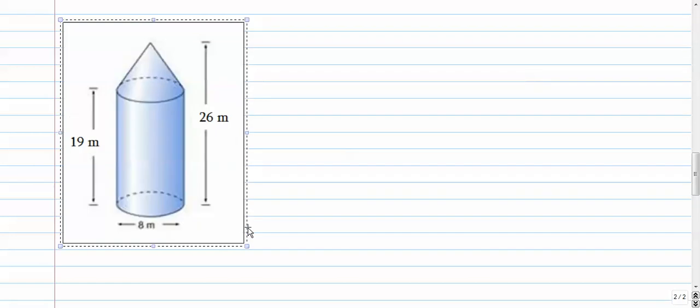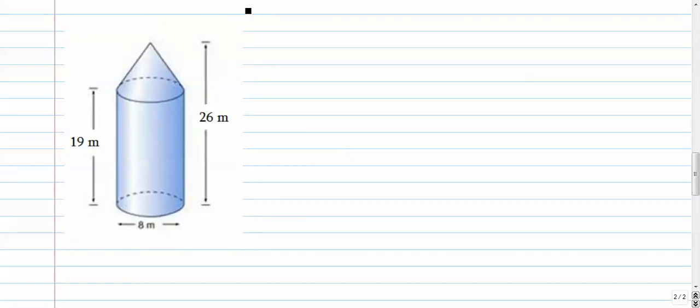I purposely put this one on here because it is also a cone on top of a cylinder. So let's do the same thing. We're going to find the volume of the cylinder first, excuse me, the cone first, which is the solid on top.